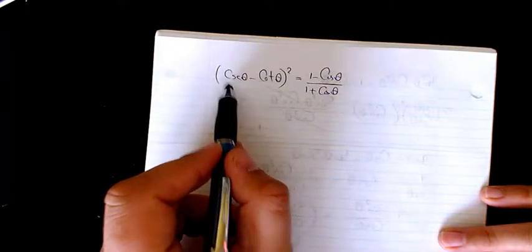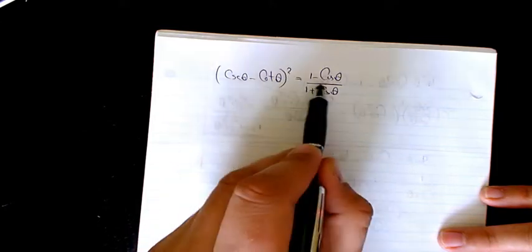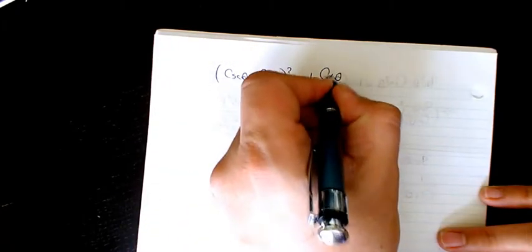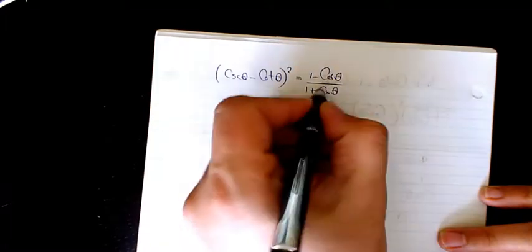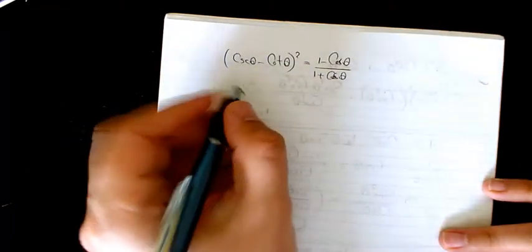In this video I have cosecant theta minus cotan theta squared equal to 1 minus cosine theta divided by 1 plus cosine. So let's see how to solve it.